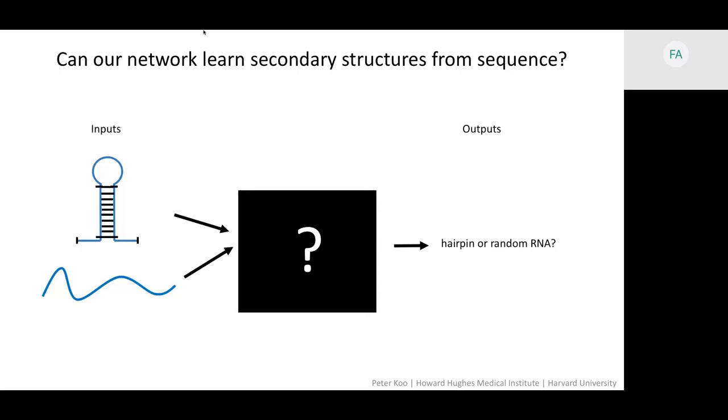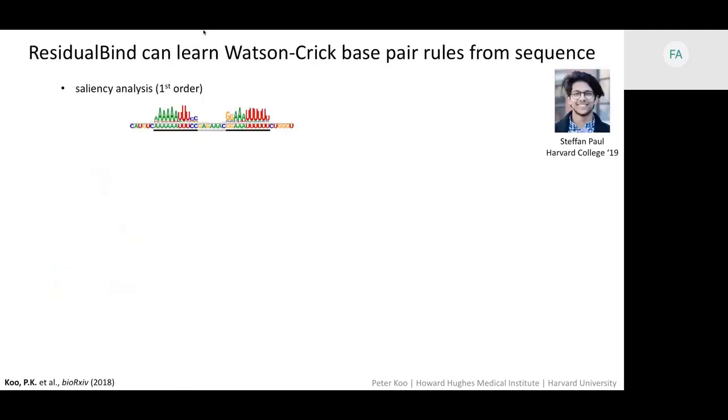But I mentioned that we should always go back and validate what the neural network has learned. So we performed saliency analysis on a sequence with a hairpin loop. And the nucleotides that are important light up right in the stem region of the hairpin loop. And that's shown with the black bars underneath. But this still doesn't tell us whether the neural network is learning specific base pair rules for individuals between two different positions.